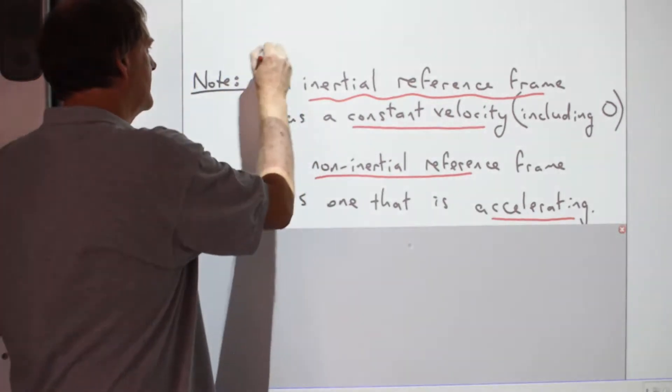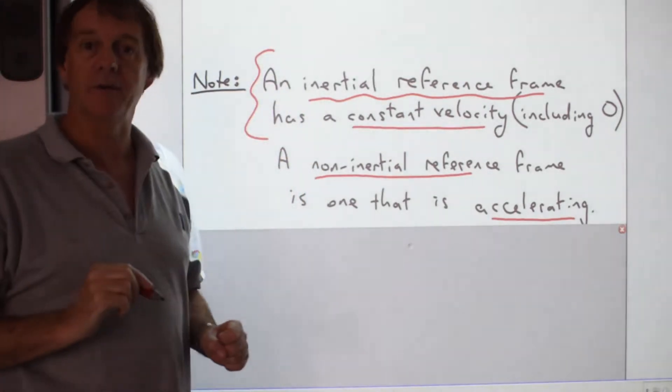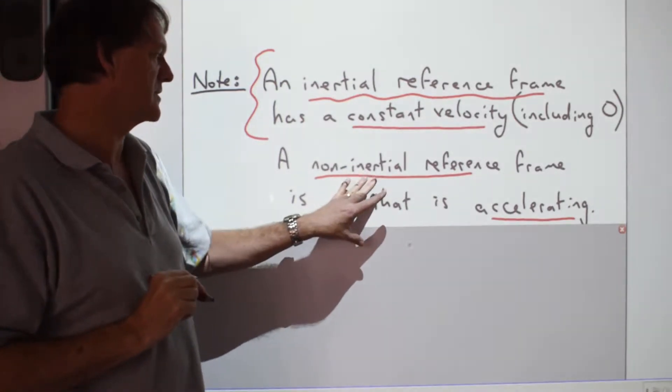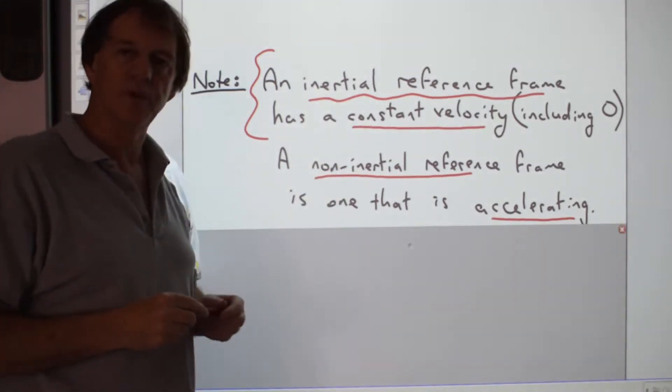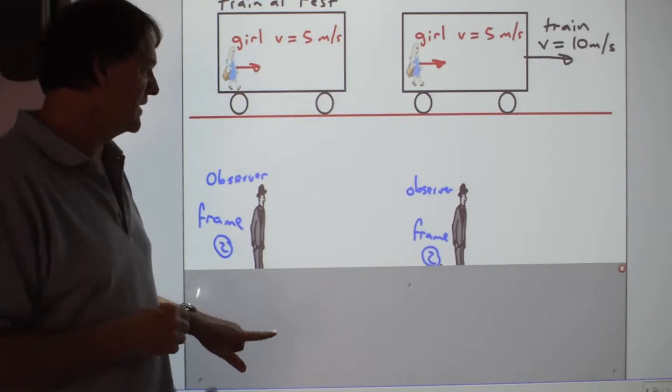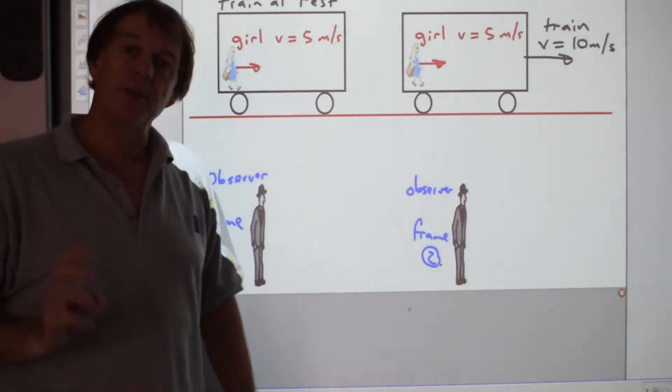We're going to be mostly dealing with inertial frames at high school. General relativity, which is done at universities, is actually where you've got a non-inertial reference frame. Let's consider these two situations here. This is very similar to the light bulb one that I showed you.